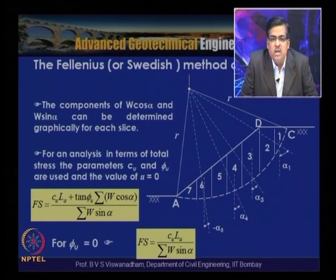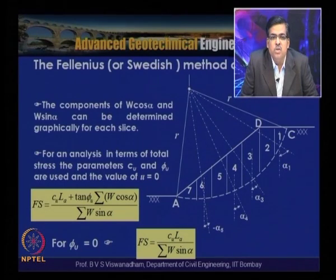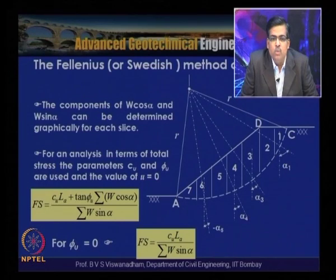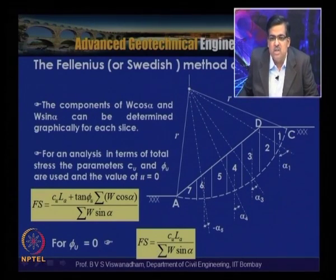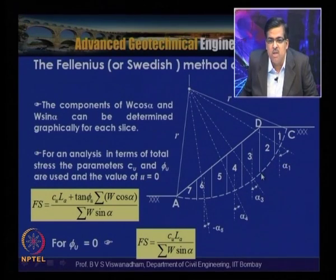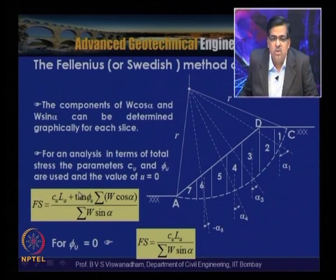For total stress analysis, parameters c_u and φ_u are used for short-term stability. When φ_u = 0, the factor of safety simplifies to: FoS = c_u·l_a / Σ(W·sin α). For a saturated clay slope under undrained conditions, this gives FoS = c_u·l_a / Σ(W·sin α), summing W1·sin α1 through W7·sin α7 in the denominator.